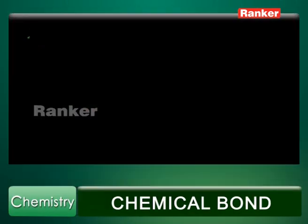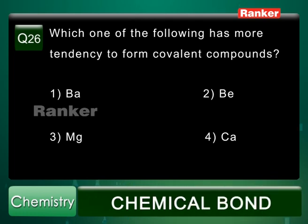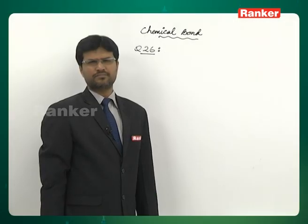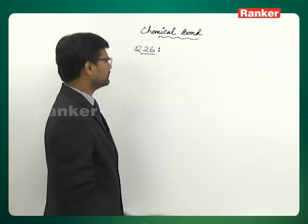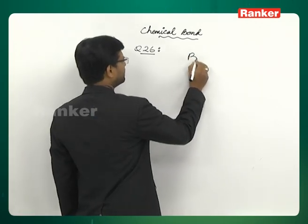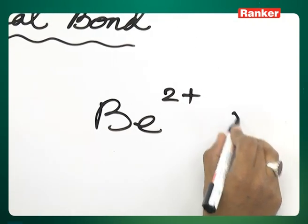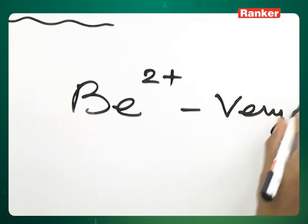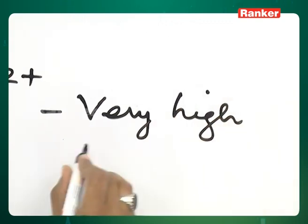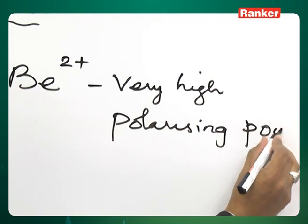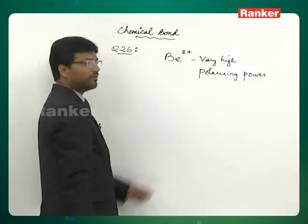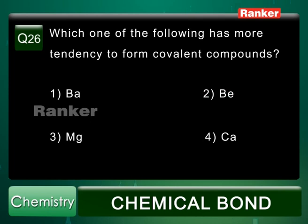Question number 26: Which one of the following has more tendency to form covalent compounds? Options: barium, beryllium, magnesium, calcium. The correct answer is beryllium. Beryllium has more tendency to form covalent compounds due to the very high charge density of Be2+. It has very high polarizing power, and because of this, its compounds are predominantly covalent. Answer is second option.